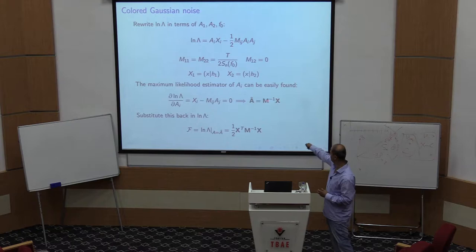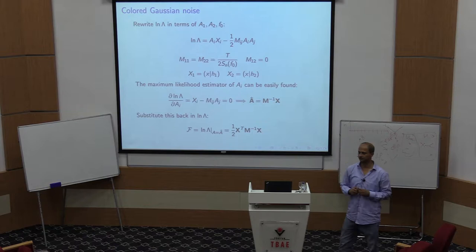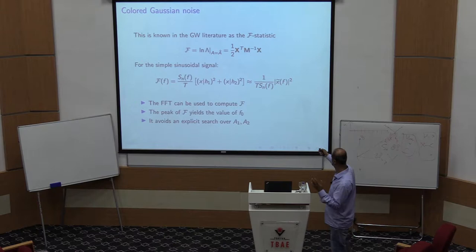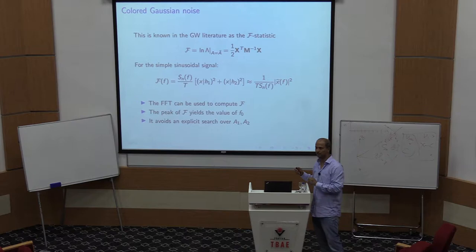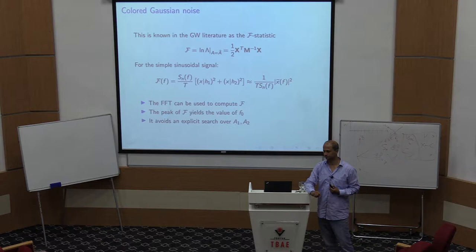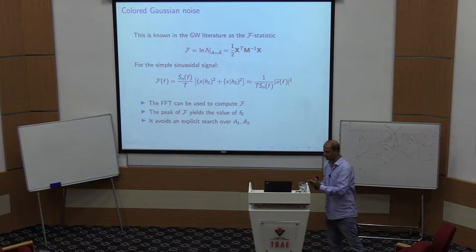Substituting the best fit values back into the log likelihood function converts it into what is known as the f-statistic — notation specific to gravitational waves. After substituting the best fit amplitudes, you get a quantity that depends only on the frequency f-naught. The goal then is simply to compute this f for all values of f-naught and find where it is maximum, also recovering the best fit amplitude and phase.